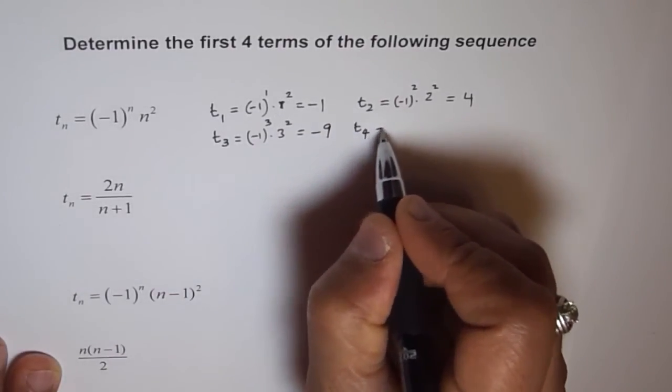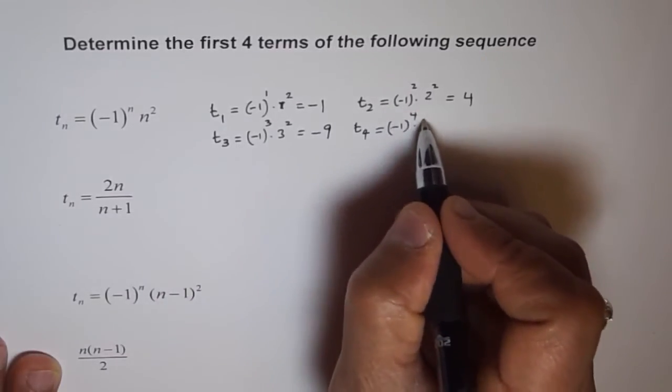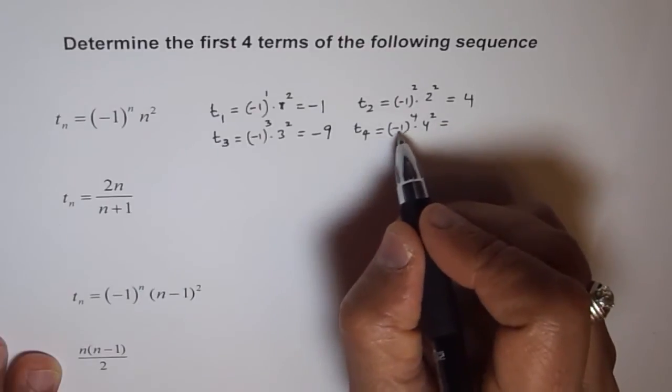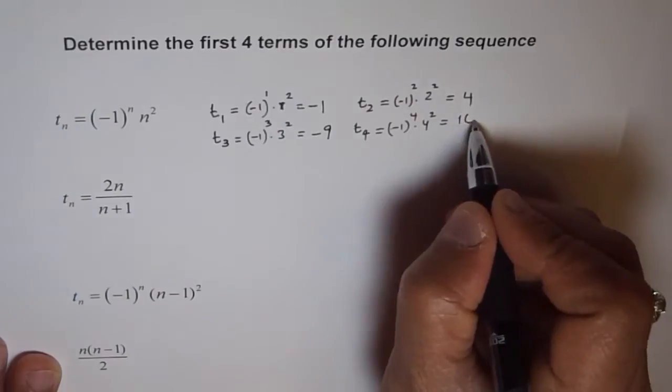Now, how about t4? t4 is minus 1 to the power of 4 times 4 square. So, that will give us a positive value. Minus 1 to the power of 4 and we get positive 16.